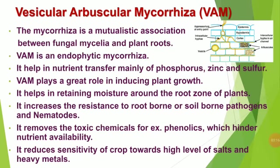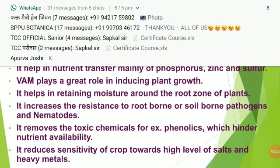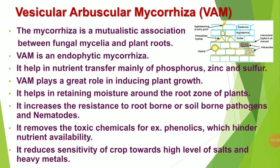Fungal biofertilizers — example: vesicular arbuscular mycorrhizae (VAM fungi). Mycorrhizae is a mutualistic association between fungal mycelia and plant roots. It is an endophytic mycorrhizae and helps in nutrient transfer, mainly of phosphorus, zinc, and sulfur. VAM plays a great role in inducing plant growth, helps in retaining moisture around the root zone, increases resistance to root-borne or soil-borne pathogens and nematodes, and removes toxic chemicals such as phenolics which hinder nutrient availability.